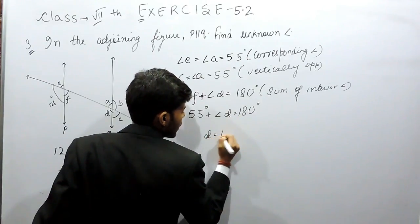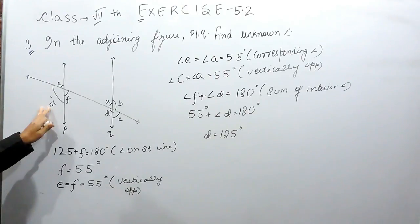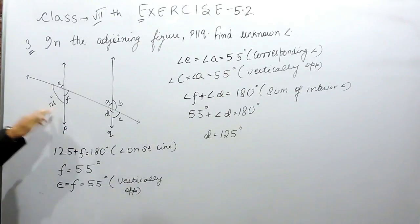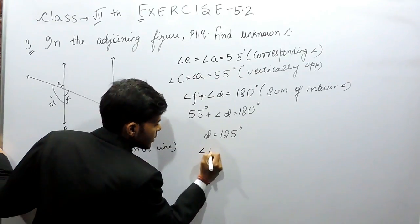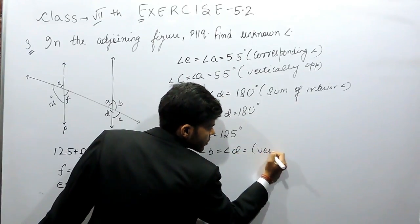So D will be equal to 125 degrees. Or what you can do is, 125 and D are making corresponding angles, so D will be equal to 125 degrees. Now, angle B is equal to D because of vertically opposite angles.